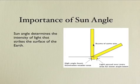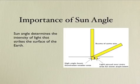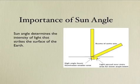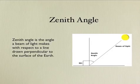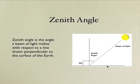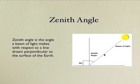As the sun angle decreases, the light is spread over a larger area, and the intensity — that is, the amount of light per unit of area, say per square meter — decreases as the sun angle decreases. Zenith angle is the angle that a beam of light makes with respect to a line drawn perpendicular to the Earth's surface. Think of it as how far the sun is from being directly overhead.